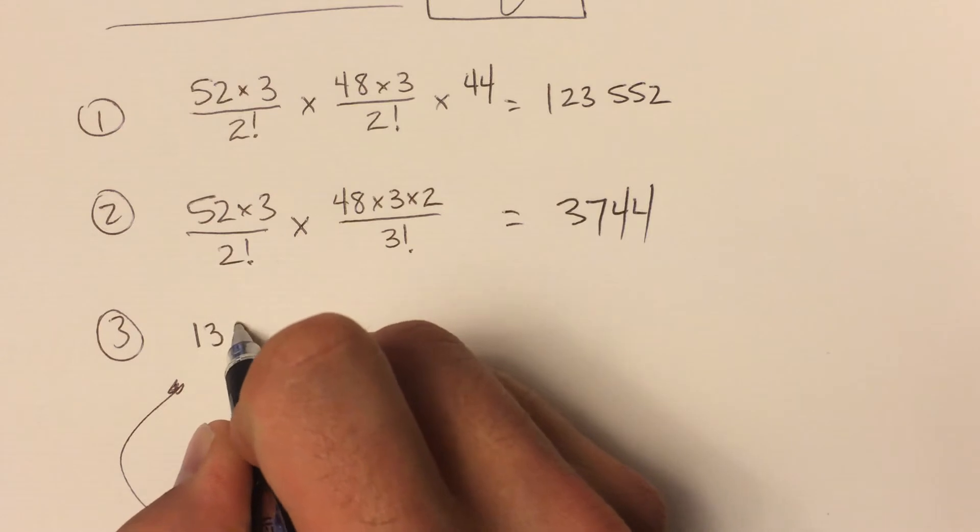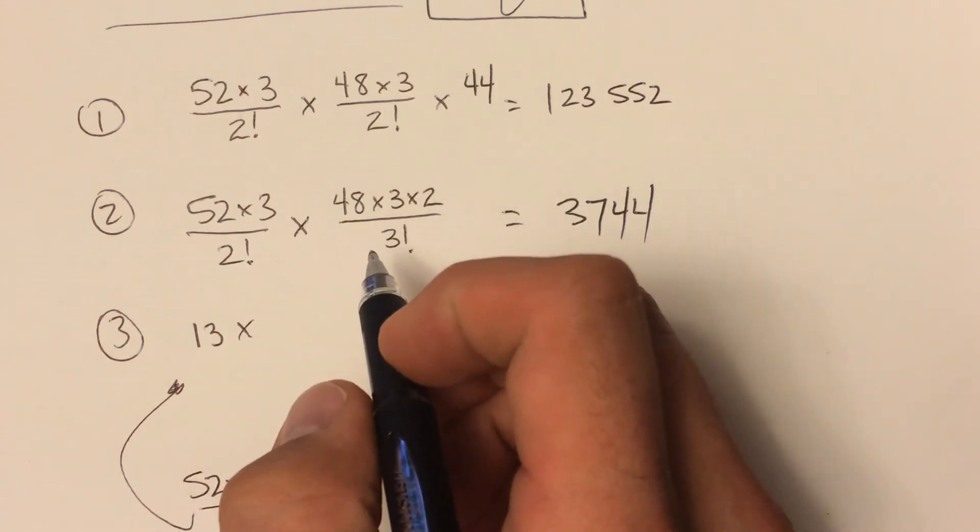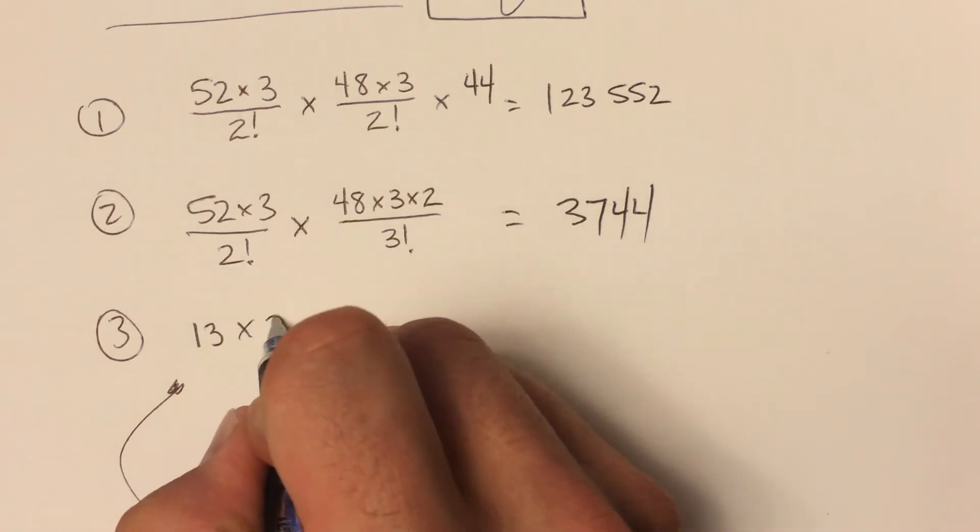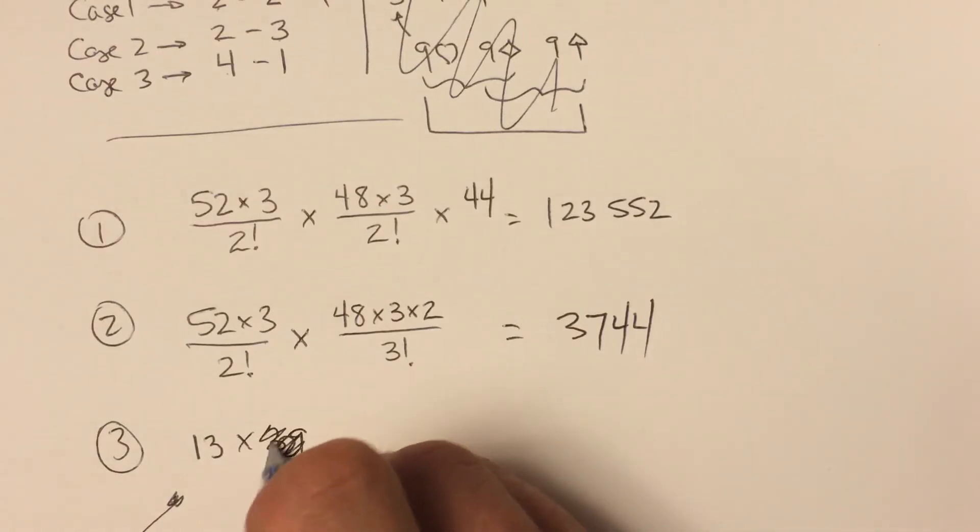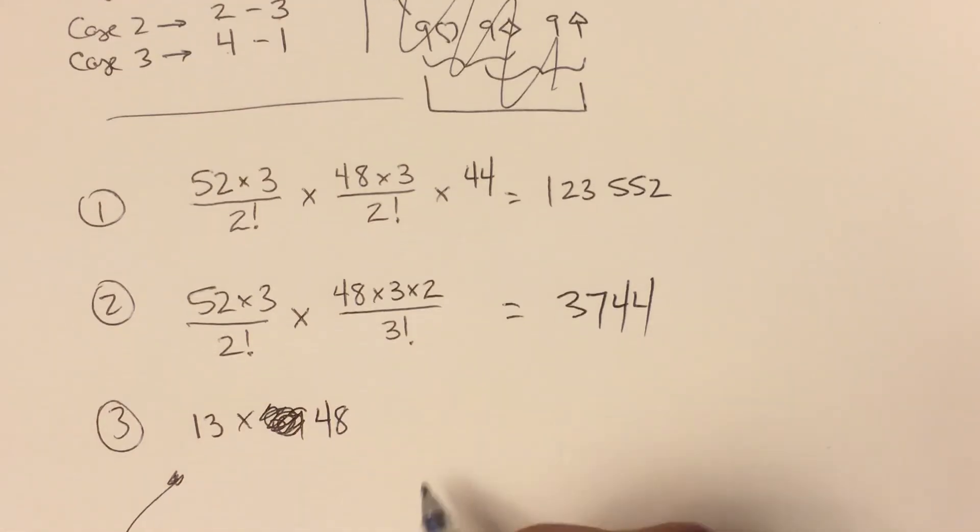And then we pick one more card. Well, there are 39 cards—oh I'm sorry, I did that wrong. Not 39, there would be 48 cards left that match that value. Sorry, I said it wrong again: choose a card, make our four of a kind, 48 cards that do not match.